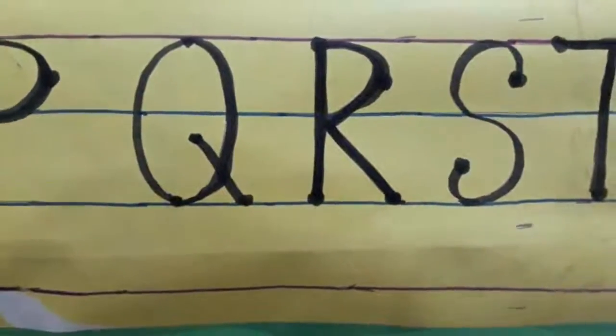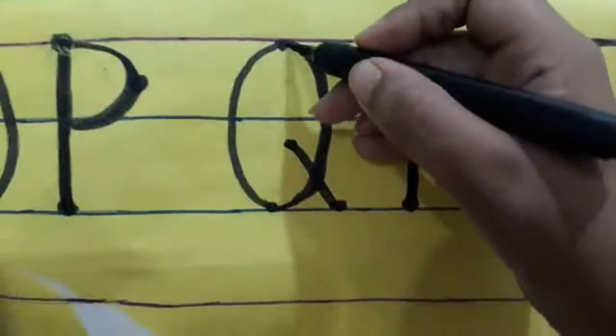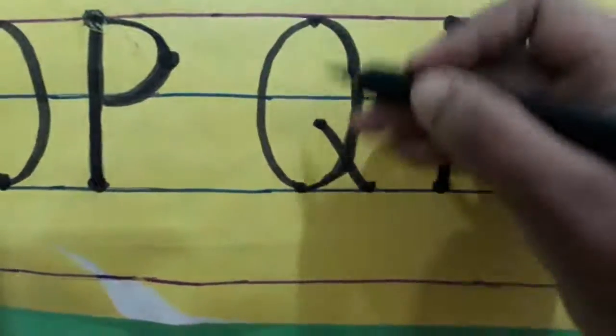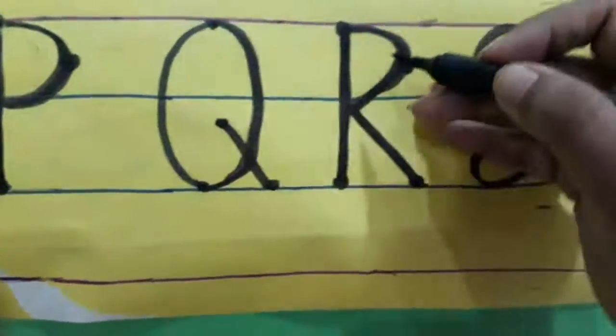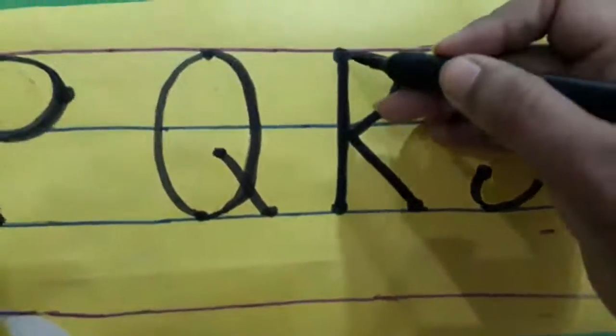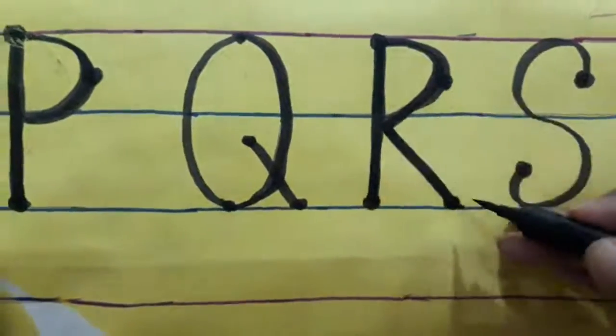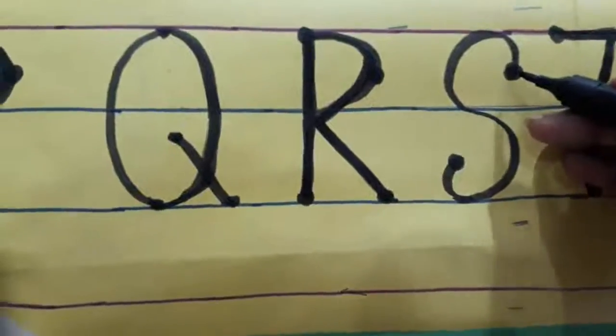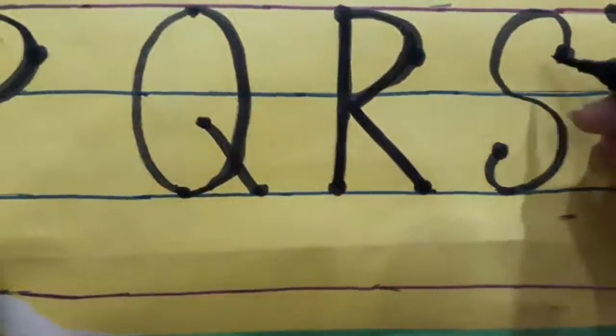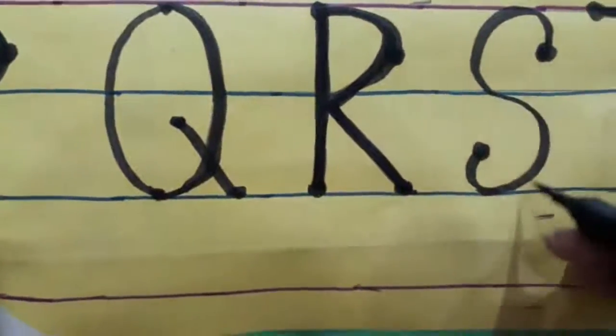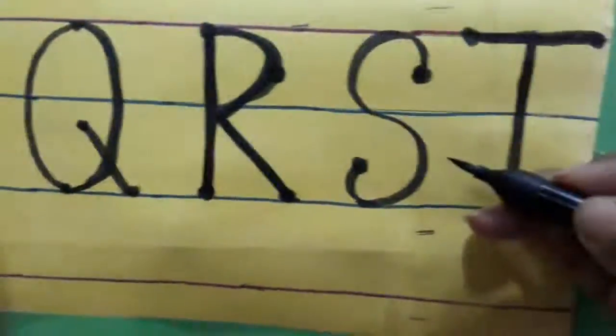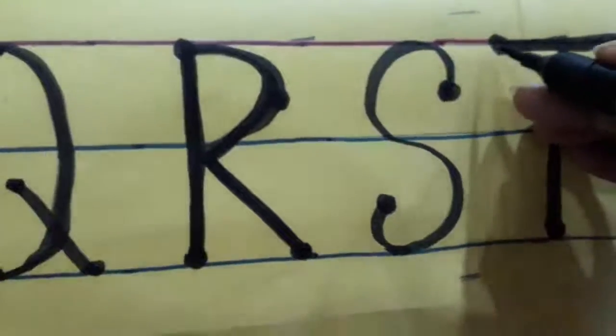So Q, R, S, T is ready to write. Again we will be doing practice. For Q, for queen, you have to put four dots, then make a circle and then a slanting line. For R, how you will make: standing line, curve, and slanting line. For S, you will make two dots in opposite direction, then curve from this side and curve from this side, and your S is ready. Now for T, you will make one sleeping line and then one standing line. So your Q, R, S, T is ready to write.